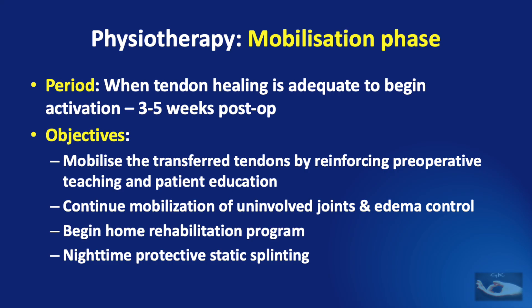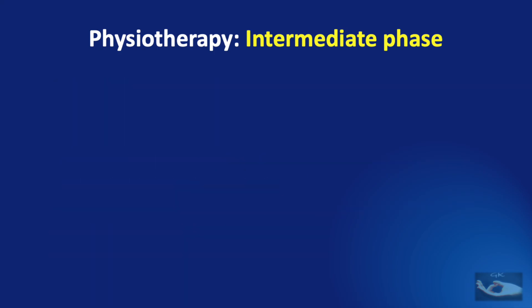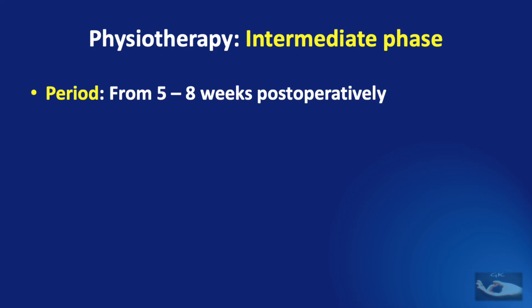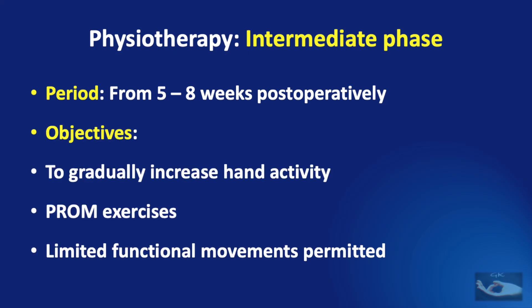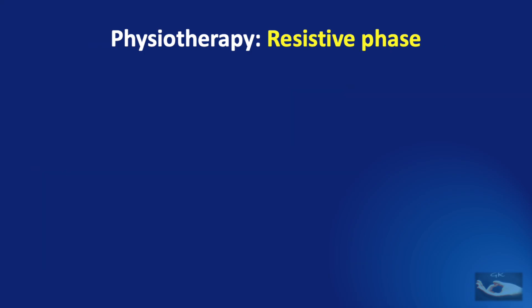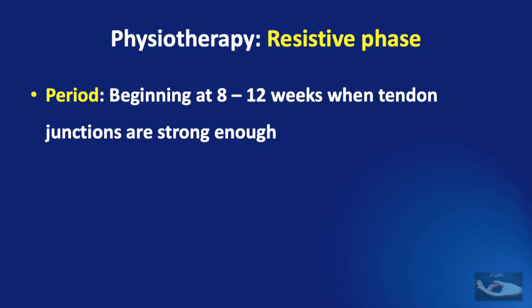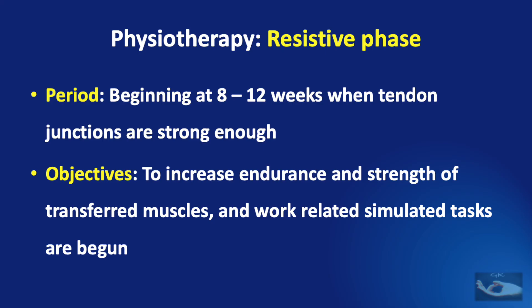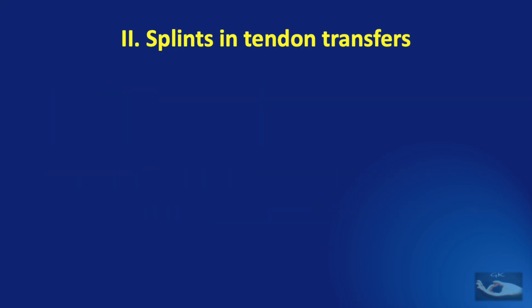We begin the home rehabilitation program and also night-time protective static splinting. Once movements of the transferred tendons are occurring, the intermediate phase begins about 5 to 8 weeks after surgery, with objectives to gradually increase hand activity. Passive range of motion exercises and limited functional movements can be permitted at this phase. The final phase is the resistive phase, which begins at around 8 to 12 weeks after surgery when tendon junctions are strong enough to resist forces. The aim is to increase endurance and strength of the transferred muscles, and work-related simulated tasks are also begun.